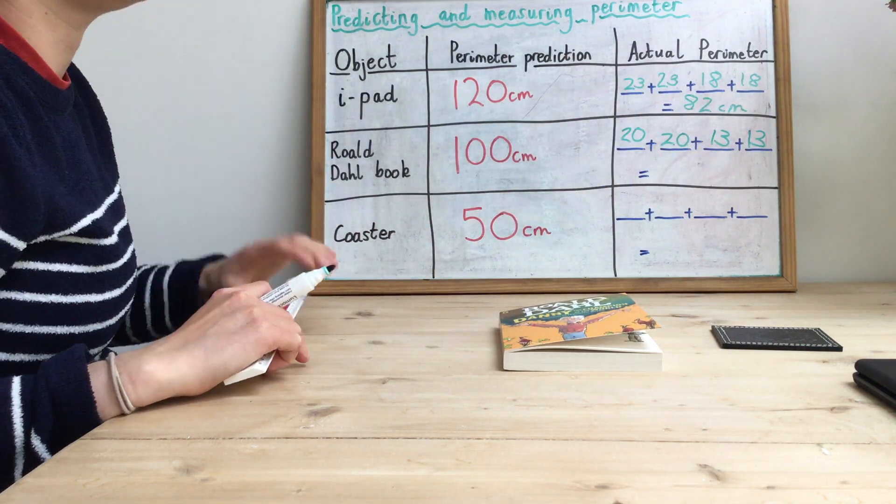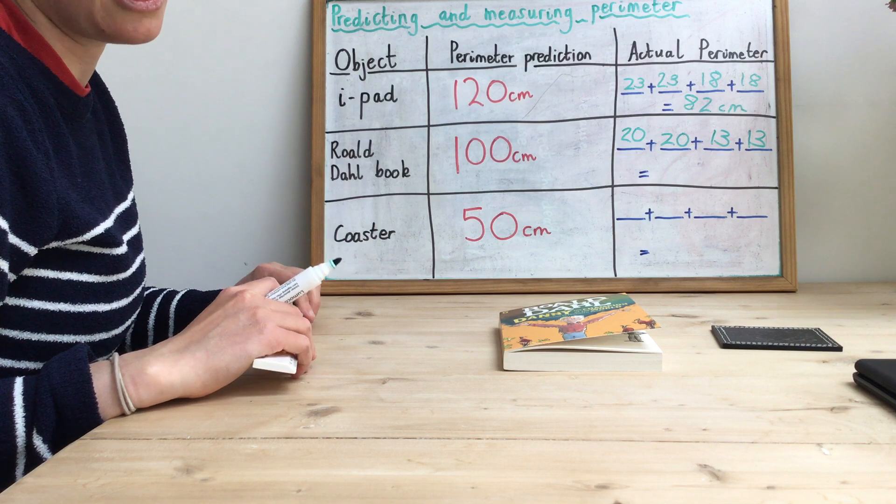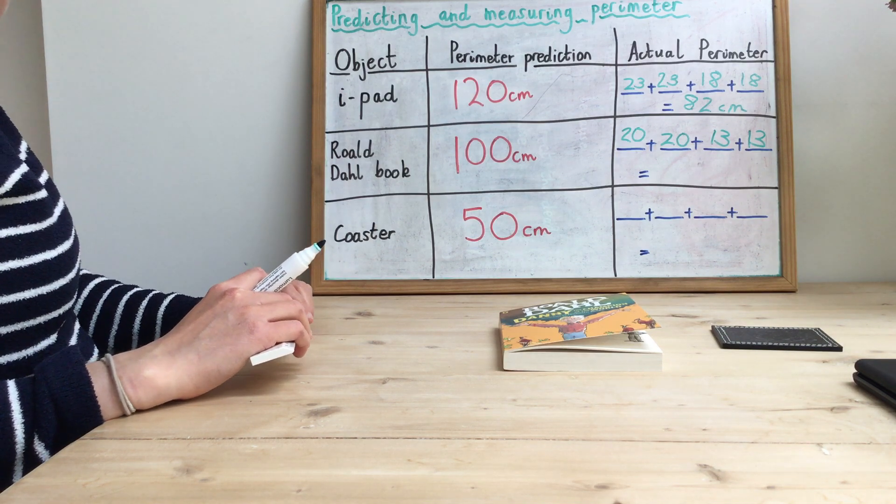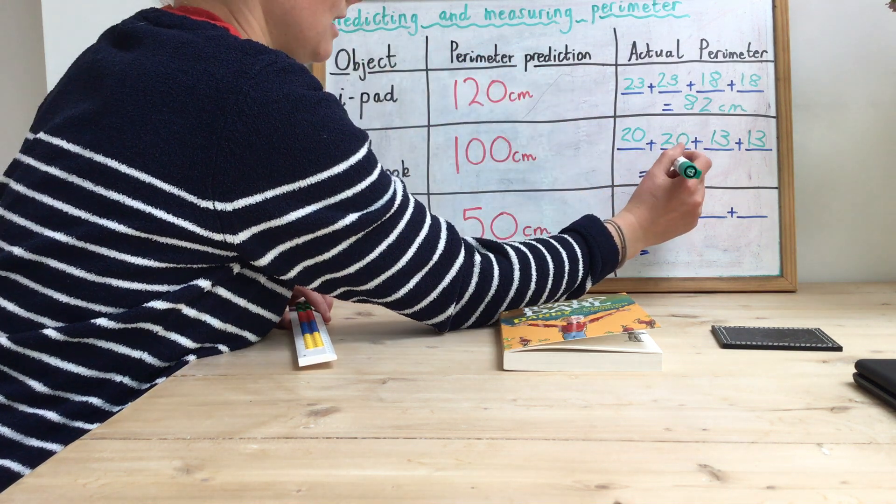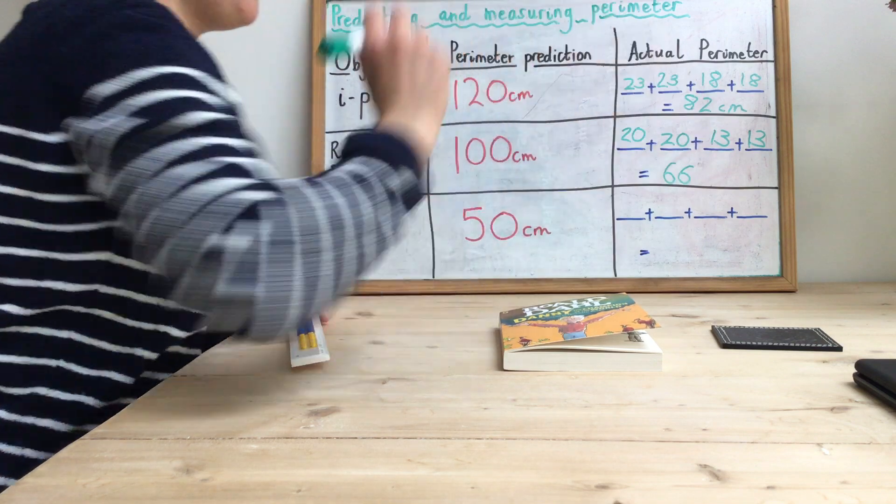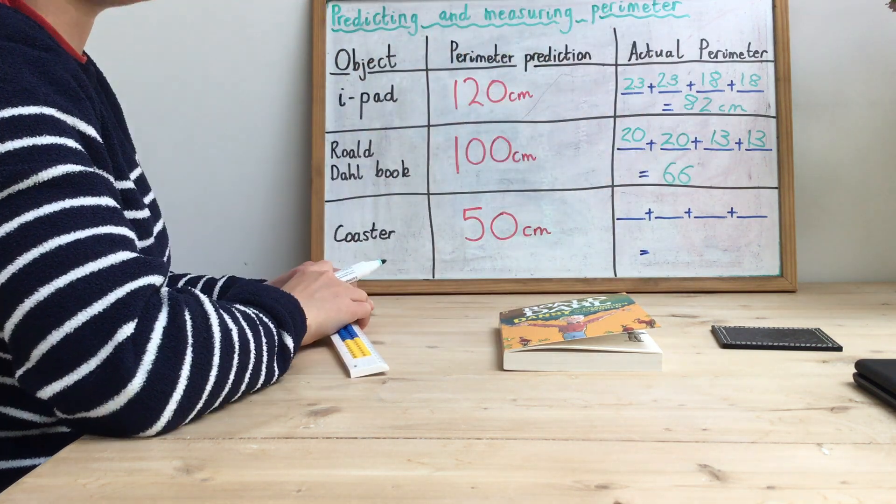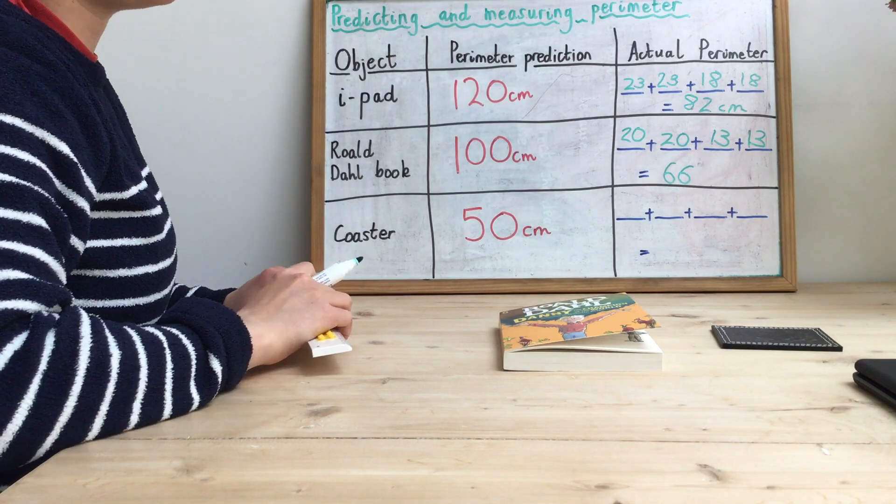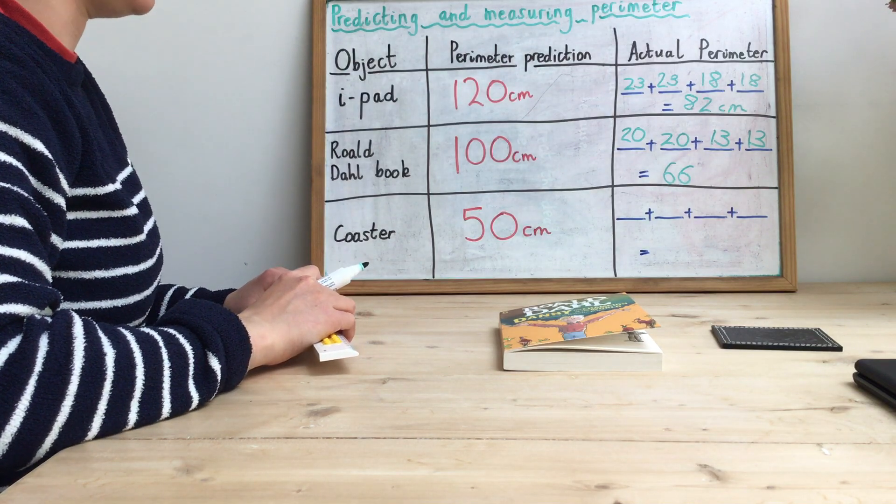Again, if you want to use your column addition skills to add all those up, that's fine. I can add those up in my head. I know that that is going to make 66. There we go. 20 plus 20 is 40. 13 plus 13 is 26. 40 plus 26 gives me 66.